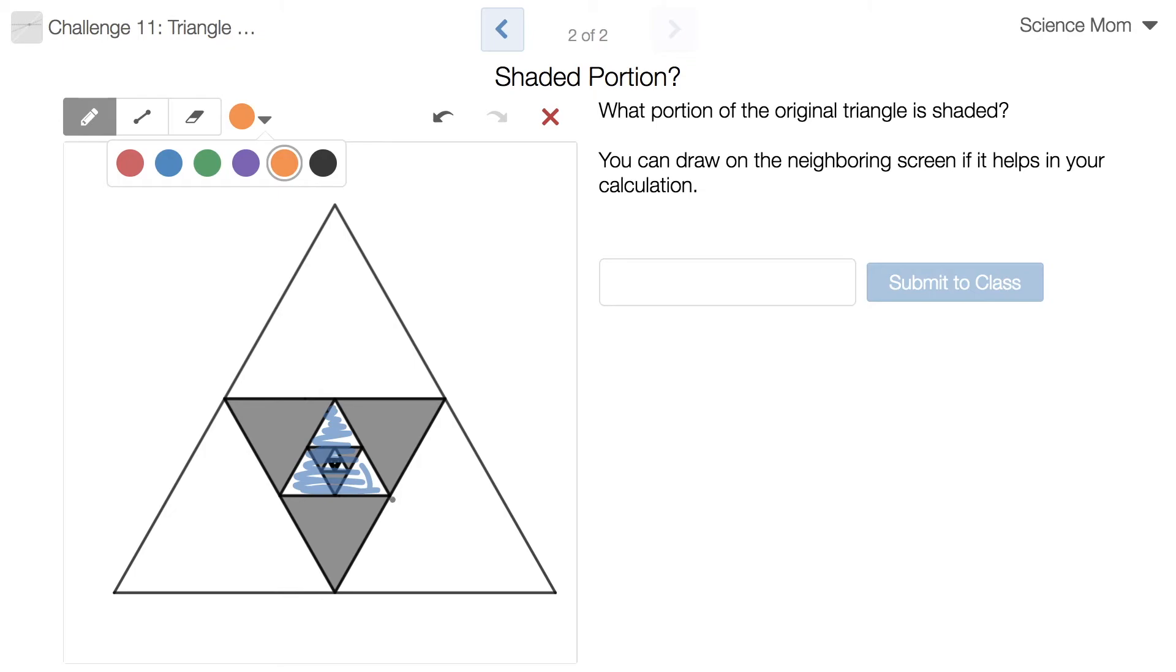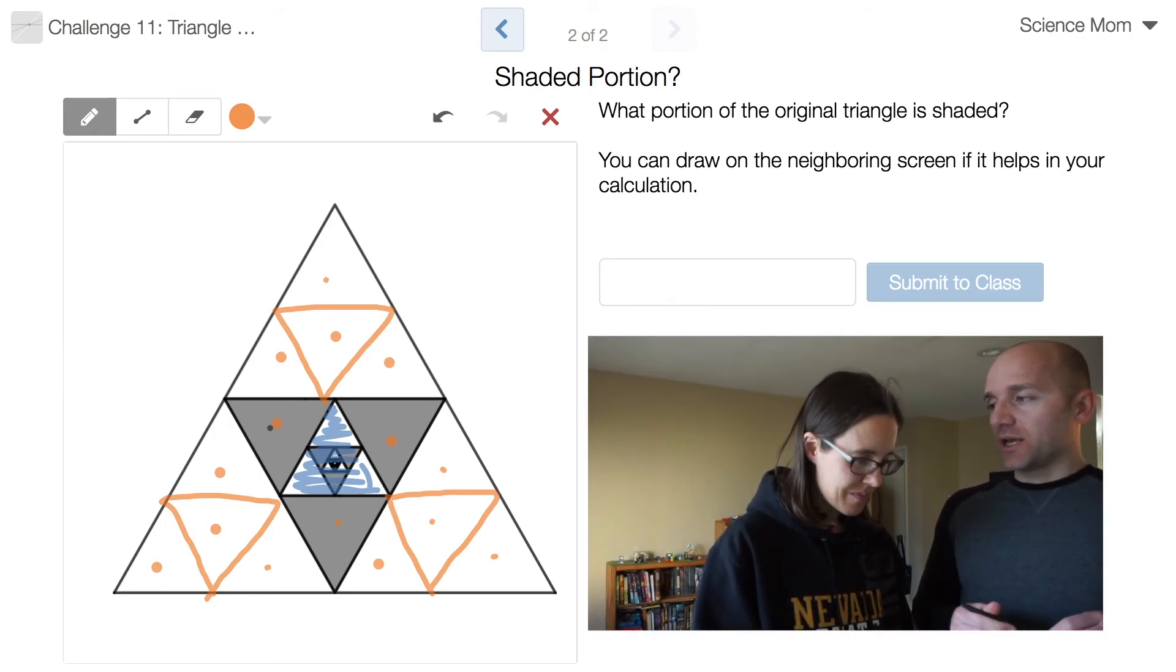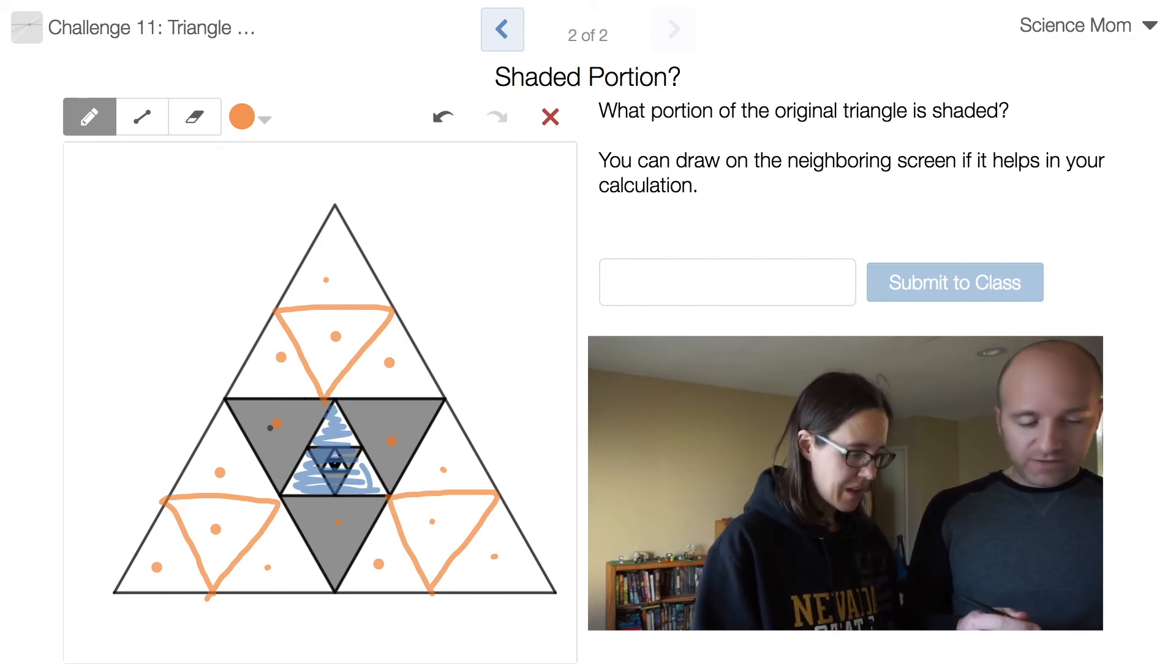So I'm going to subdivide each of these other three big triangles, and that creates one, two, three, four, five, six, seven, eight, nine, ten, eleven, twelve, thirteen, fourteen, fifteen triangles of the same size in the outermost region. Out of those fifteen, how many of them were shaded? Three. Three out of fifteen were shaded.